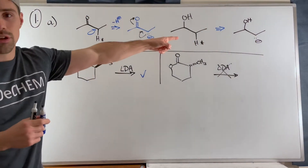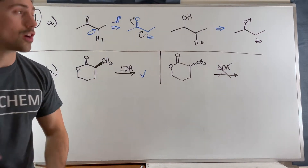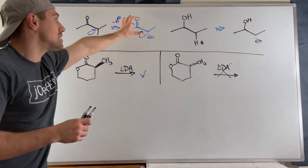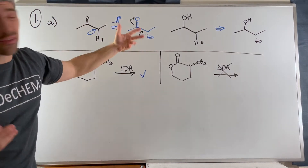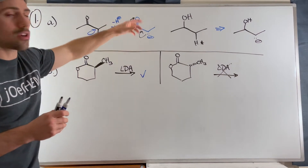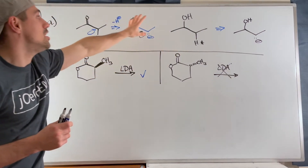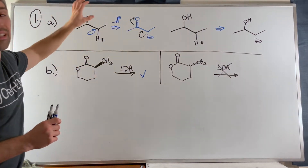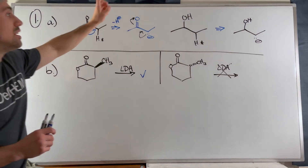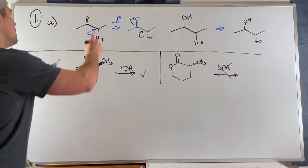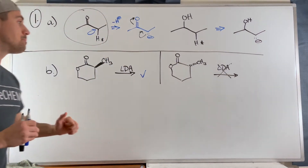In that situation on the right, that carbon bearing the lone pair is the only one bearing the burden of hosting that negative charge. Meanwhile, over here we have resonance — delocalization of electrons via resonance is stabilizing. So this conjugate base is more stable than that one, which means this came from a stronger acid. Therefore this hydrogen is more acidic than that one.